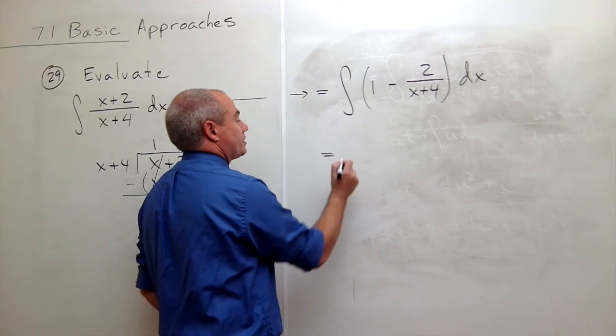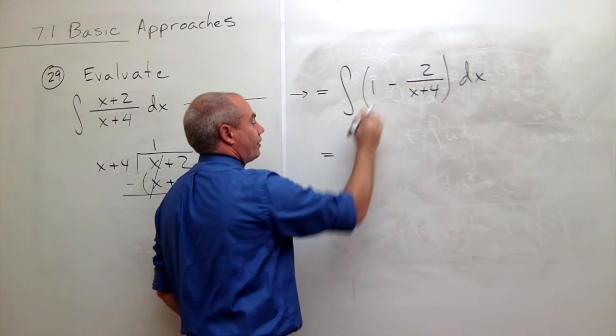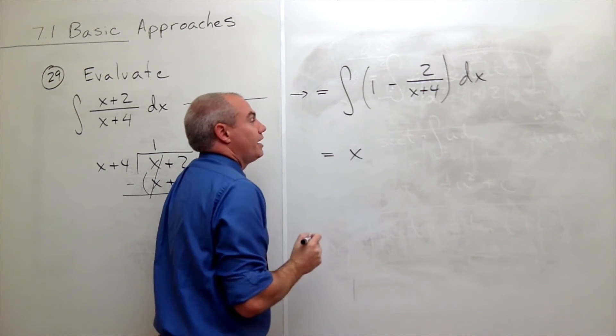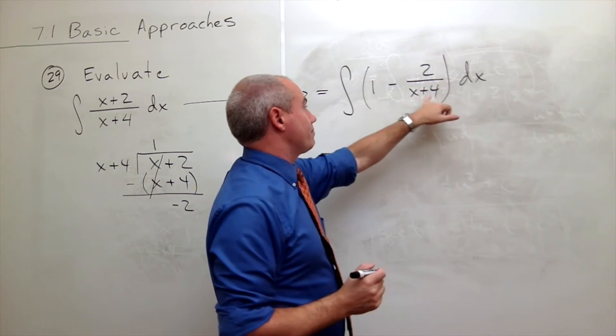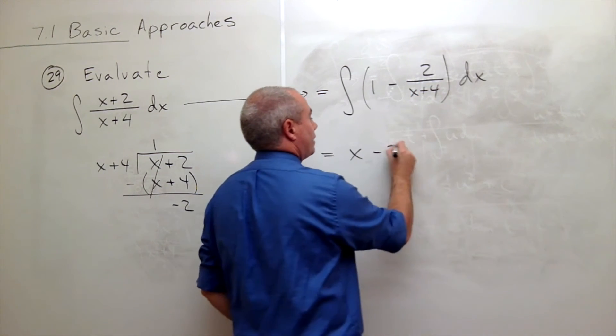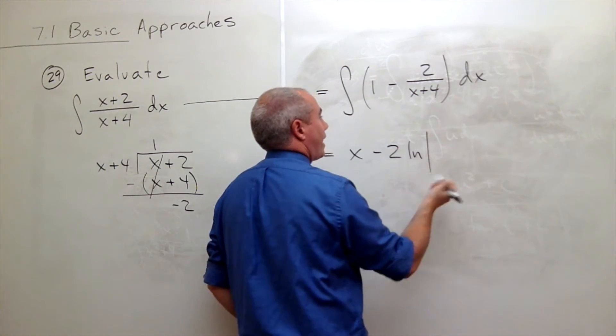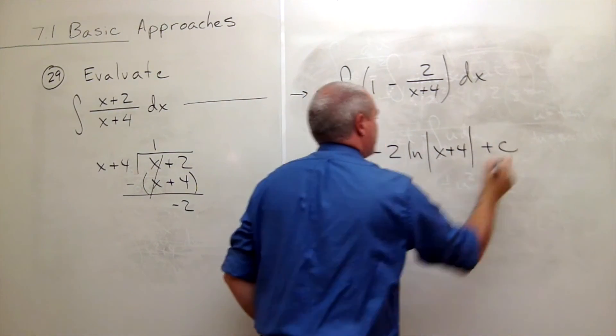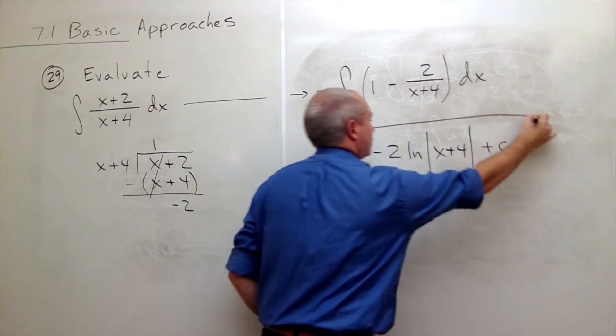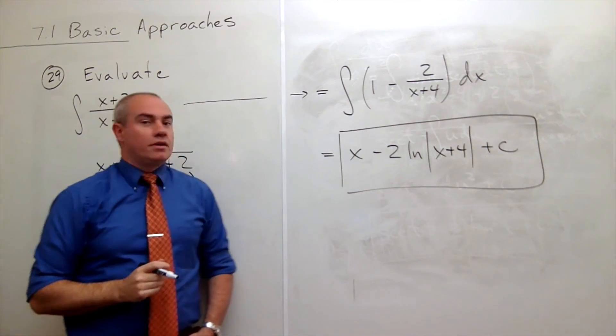So we can rewrite this. Let's take an antiderivative. Antiderivative of 1 is x. And the antiderivative of negative 2 over x plus 4 is negative 2 ln absolute value of x plus 4 plus c. And we're done.